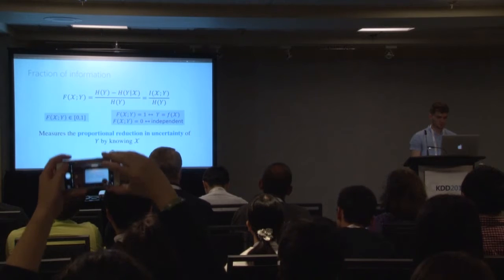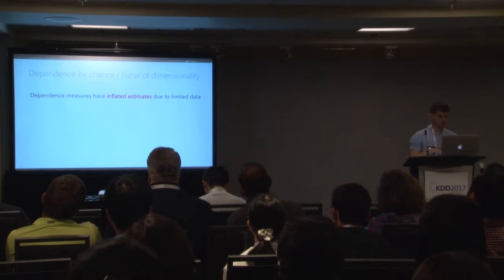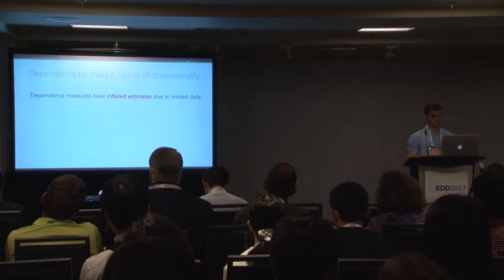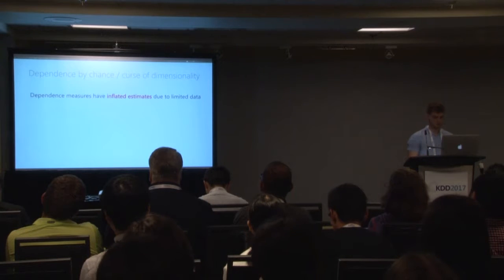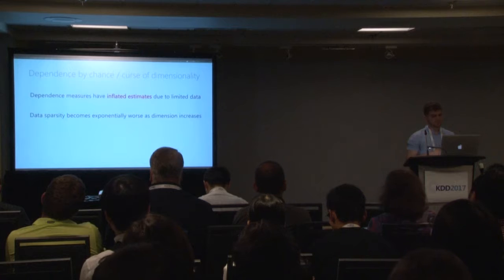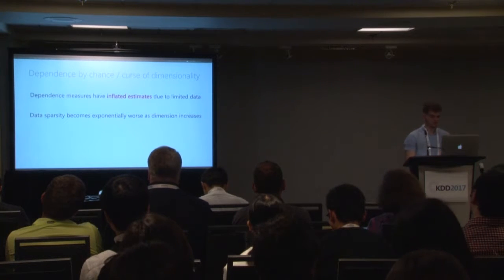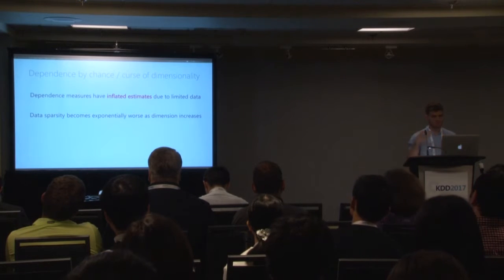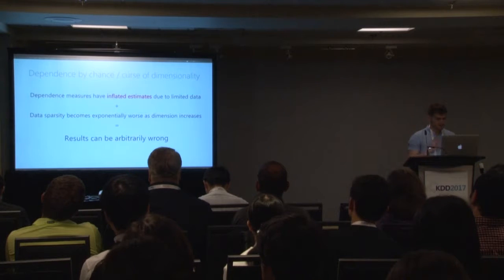First, dependence measures have inflated estimates due to limited data — a behavior called dependence by chance. We also need to consider the curse of dimensionality, where data sparsity becomes exponentially worse as dimension increases. And if these two are combined, which they are bound to be when searching high-dimensional spaces for functions, then the results can be arbitrarily wrong.